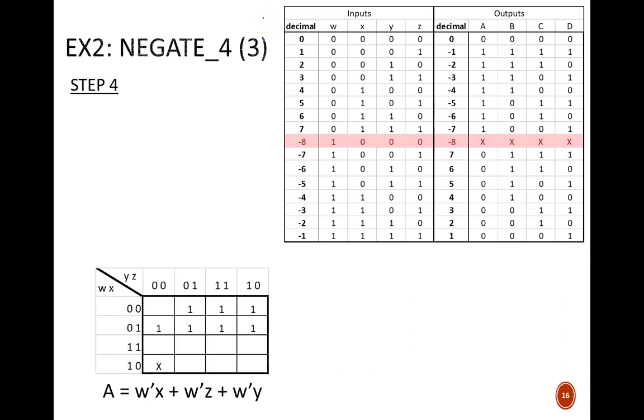After the truth table comes the step of deriving the Boolean equations, one for each output variable. Using a four input K-map, here are the results for A. Note the don't care X that appears on the square for input 1, 0, 0, 0. On this map, we obtain three groups of four. For your own personal practice, go ahead and pause the video, then draw the maps and find the simplest equations for B, C, and D. They get a little tricky.